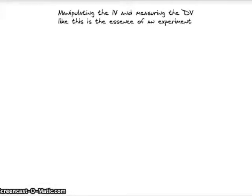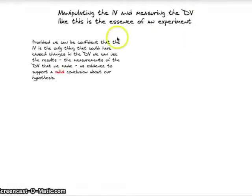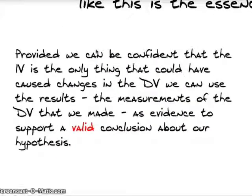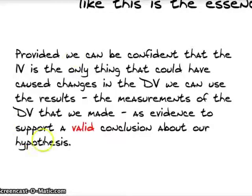If we manipulate the independent variable and measure the dependent variable like this, that's essentially the essence of an experiment — specifically a laboratory experiment. That's our ideal, paradigmatic form. Provided we can be confident that the independent variable is the only thing that could have caused changes in the dependent variable, then we can use the measurements of the DV as evidence to support a valid conclusion about our hypothesis. The validity here is internal to the experiment — it's internal validity.